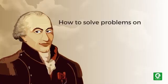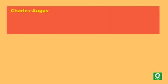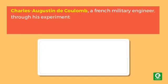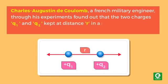How to solve problems based on Coulomb's law. Charles-Augustin de Coulomb, a French military engineer, through his experiments found out that two charges q1 and q2 kept at a distance r in a medium exert a force F on each other.